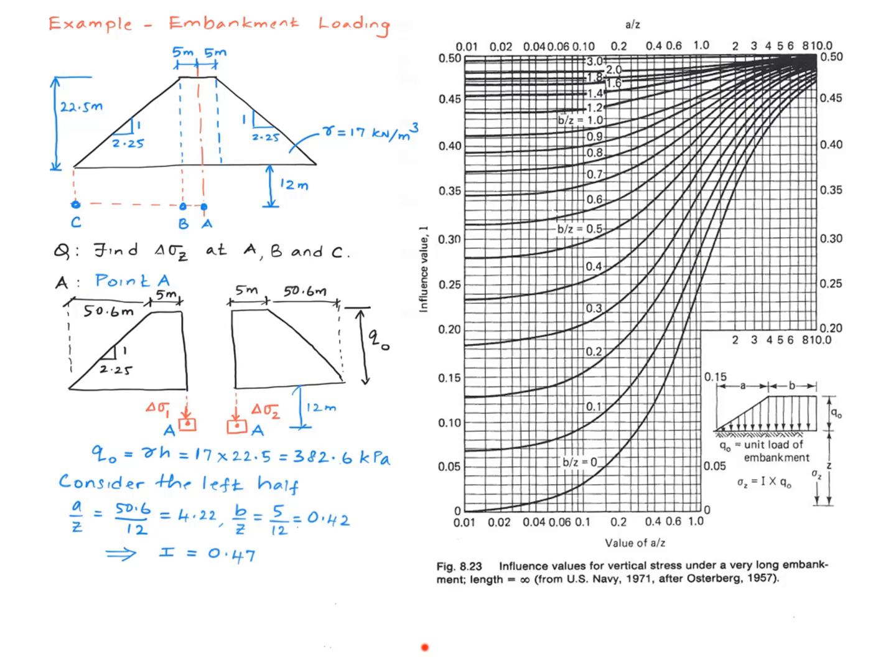A is 50.6, B is 5 meters. So A over Z is 50.6 over 12, that works out to be 4.22. B over Z is 5 over 12, which is 0.42. So with these ratios, I go to the chart.